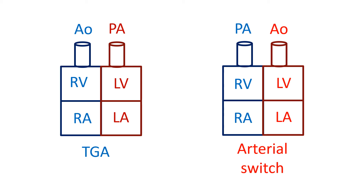Similarly, blood returning from the lungs to the left atrium after oxygenation is redirected to the right ventricle. So, though the position of the arteries is not corrected, the type of blood which they receive is that which they should have received normally. Hence, it is a functional correction of transposition of great arteries — just as we say, a double negative becomes a positive.